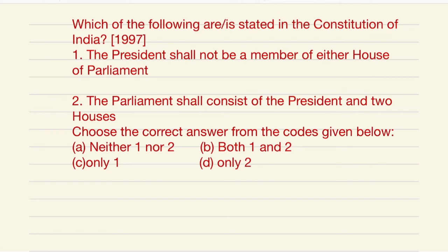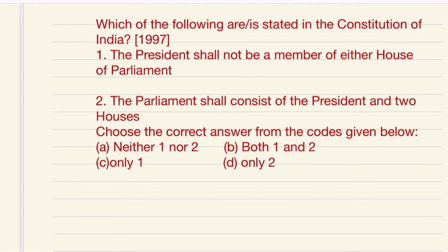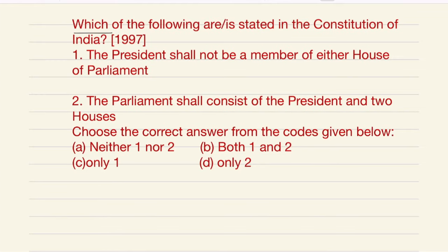Hi guys, welcome to UPSC Cloud. Today I am here with another question which came in the year 1997. It says: which of the following are or is stated in the Constitution of India? First option: the President shall not be a member of either house of the Parliament. Second option: the Parliament shall consist of the President and two houses.